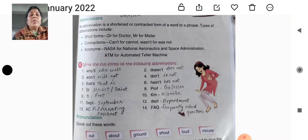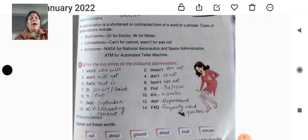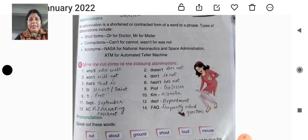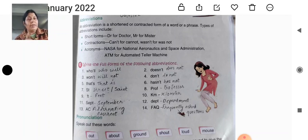Students, we have already done 'answer the following questions' and 'answer with reference to the context' during your offline classes. Before one day, we have already done 'write the full form of the following abbreviations,' exercise number E.